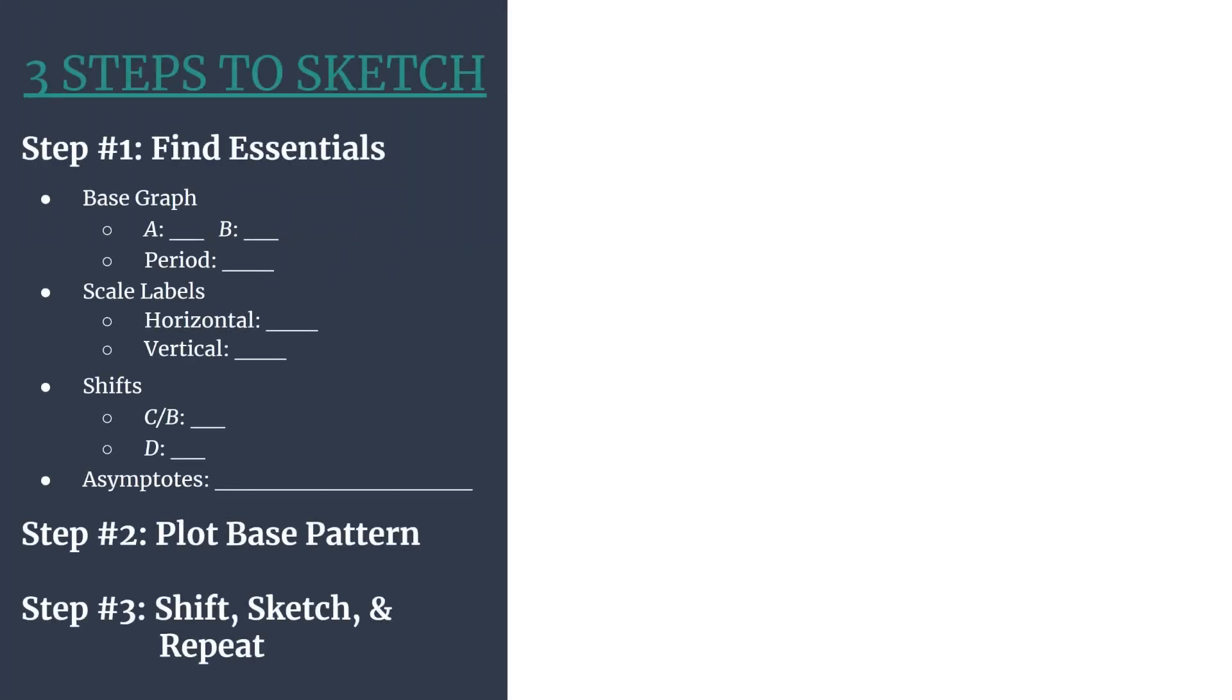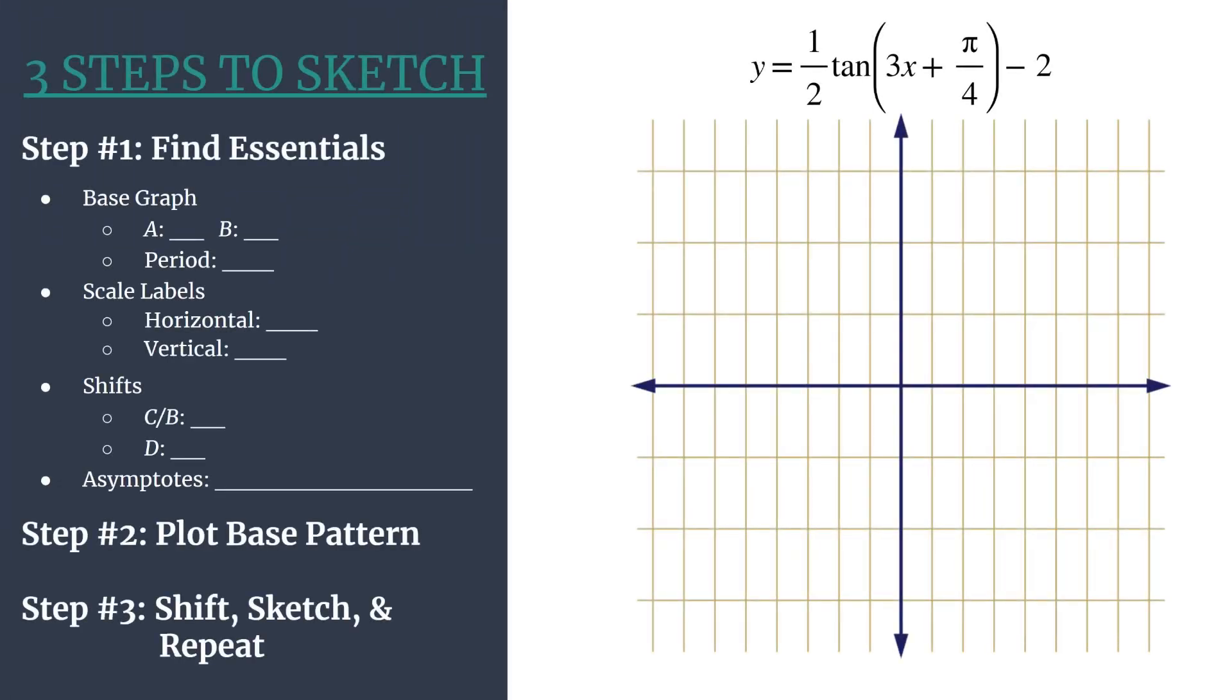Here's our method outline and a grid with our equation. Notice our equation is in the form y equals a tangent of bx minus c plus d. If you wanted to, you could factor out that b term so that you could clearly see the phase shift or horizontal shift just by looking at the equation, but we'll work with it as it is for this particular equation.